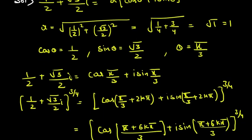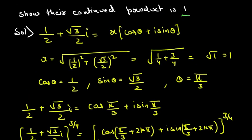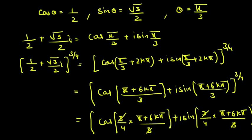Now we substitute this and take the given power which is 3/4. To find roots, we add the period to the angle, and k will take values 0, 1, 2, 3 — from 0 to n−1.